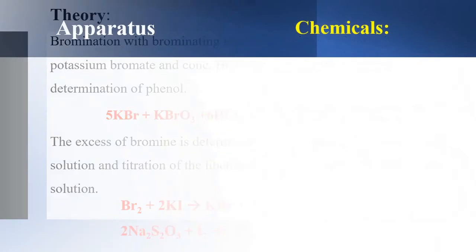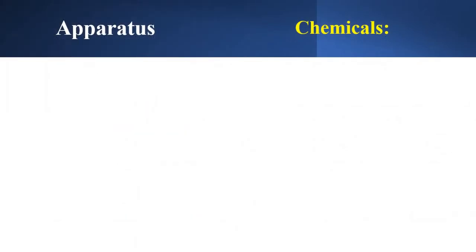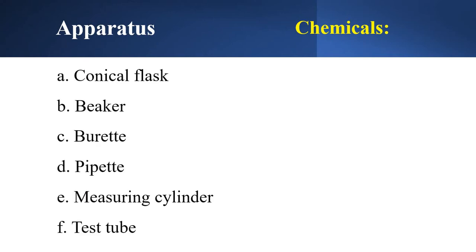Now we will see the different apparatus and chemicals used for this experiment. The apparatus are the common apparatus for the titration process: conical flask or iodine flask, beaker, burette, pipette, measuring cylinder, and test tube.